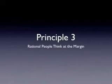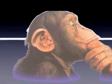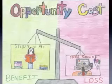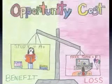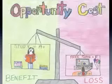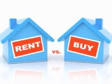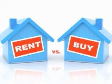Principle three: rational people think at the margin. Being a rational thinker means having the ability to weigh your pros and cons. In economics, we refer to this as marginal benefits versus marginal costs. Are the marginal benefits greater than the marginal costs, or are the marginal costs greater than the marginal benefits? The decision to rent or buy is an example of being rational and thinking at the margin — a tough decision where people must look at the trade-offs and make a rational decision.